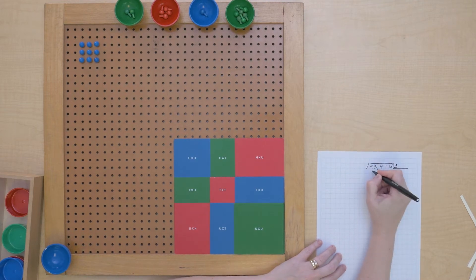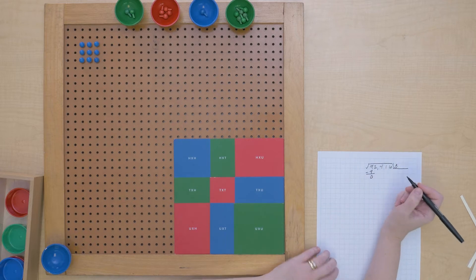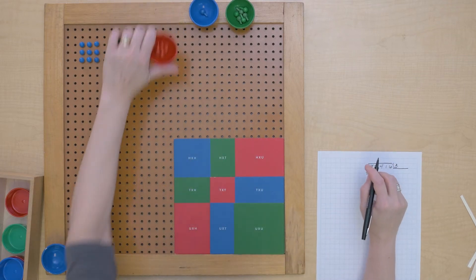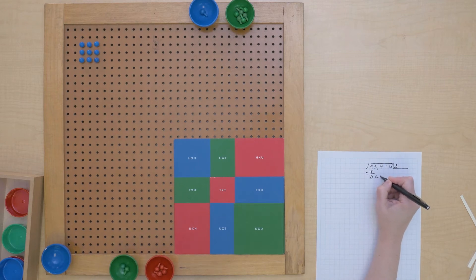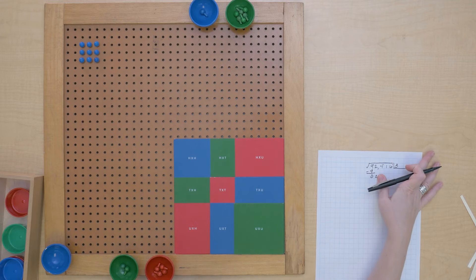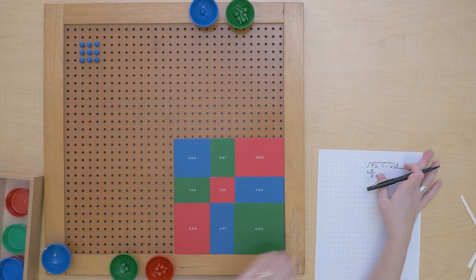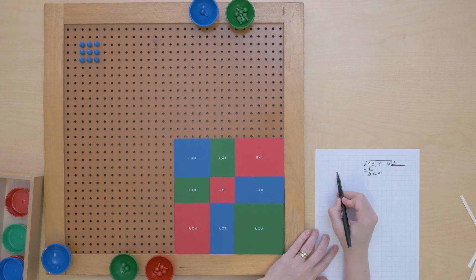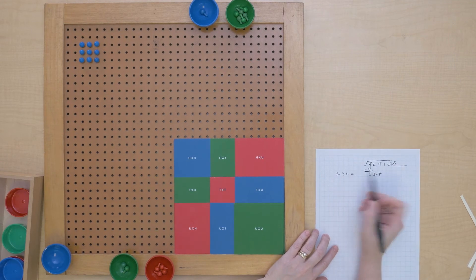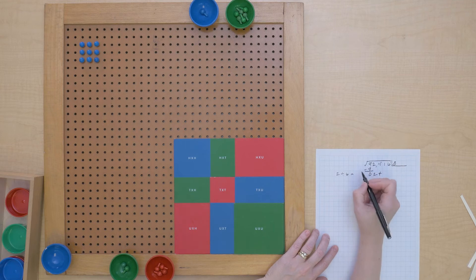We had nine and we use nine, we have zero left. So now we'll bring down our next period, 24, and we're just going to look at that two thousands. We know we're going to need to build out six. So two divided by six equals, well we can't do that.